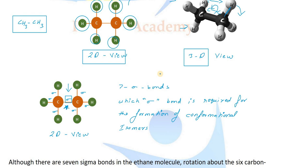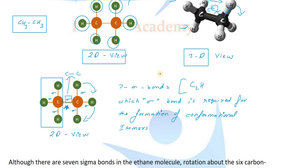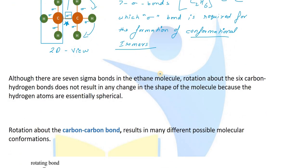Conformational isomerism arises because of the C-H bond and C-C bond. When the carbon-carbon single bond rotates, the hydrogen positions change — front and back — giving different angles. Although ethane has seven sigma bonds in total, only the carbon-carbon sigma bond rotation gives conformational isomerism.